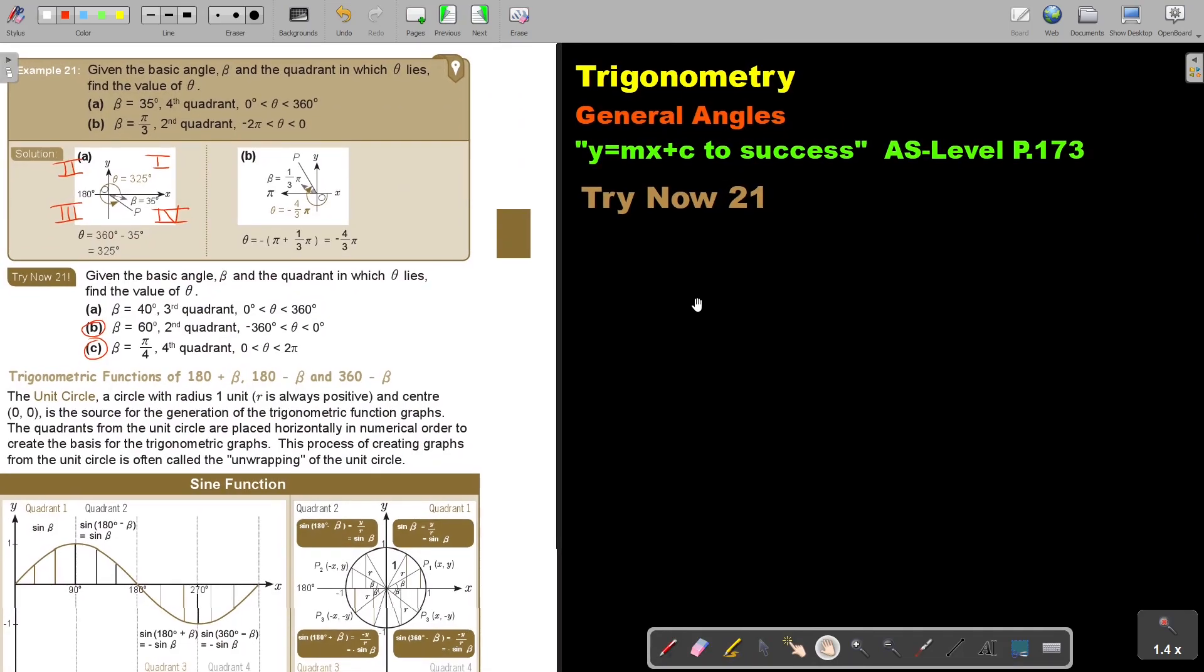Number B: β = 60° and it's in the second quadrant. So it's in the second quadrant, 1, 2, and it's 60 degrees here. Remember, β is always the angle to the x-axis. That is 60 degrees.